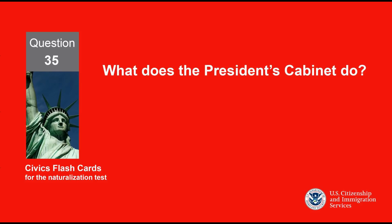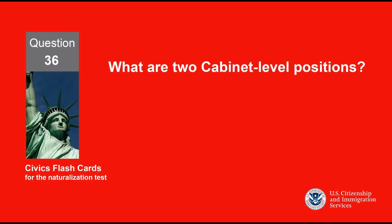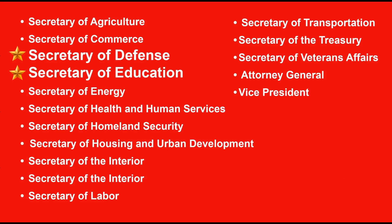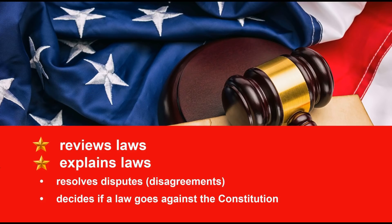What does the president's cabinet do? Advises the president. What are two cabinet-level positions? Secretary of Defense. Secretary of Education. What does the judicial branch do? Reviews laws. Explains laws.